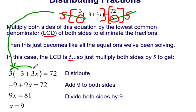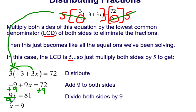We then solve this multi-step equation like normal. We'll distribute the 3 to have negative 9 plus 9x equals 72. We'll add 9 to both sides to undo the subtracting 9, and we'll divide both sides by 9 to undo the multiplying by 9, leaving us an answer of x equals 9.